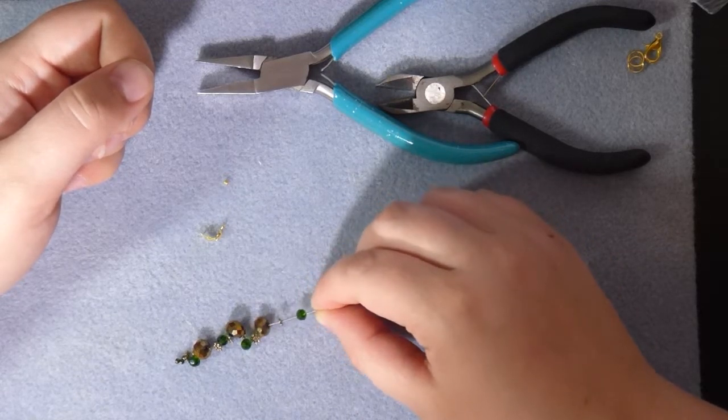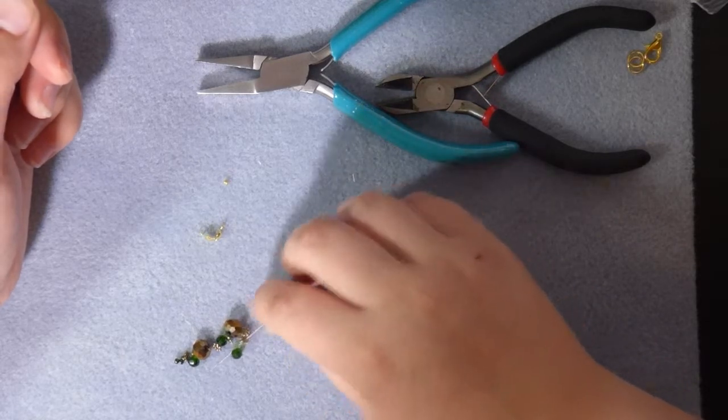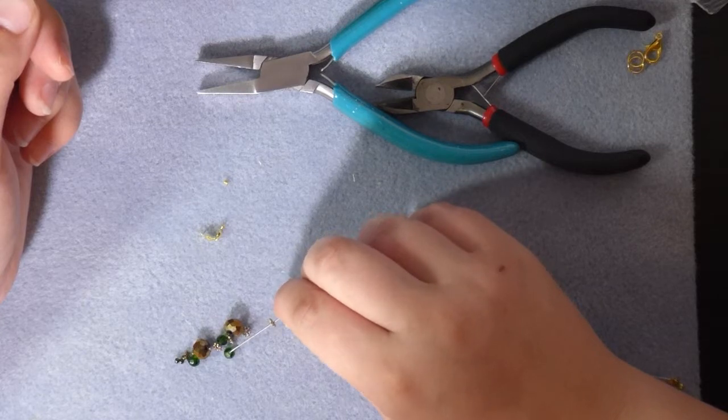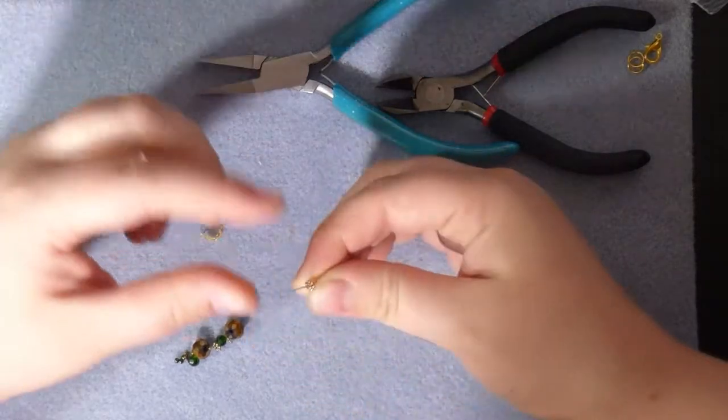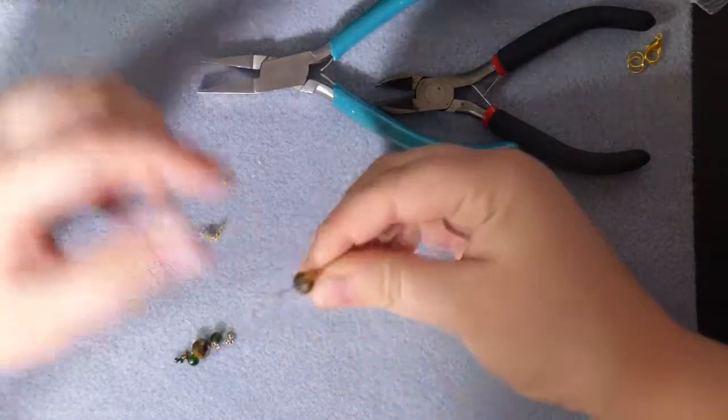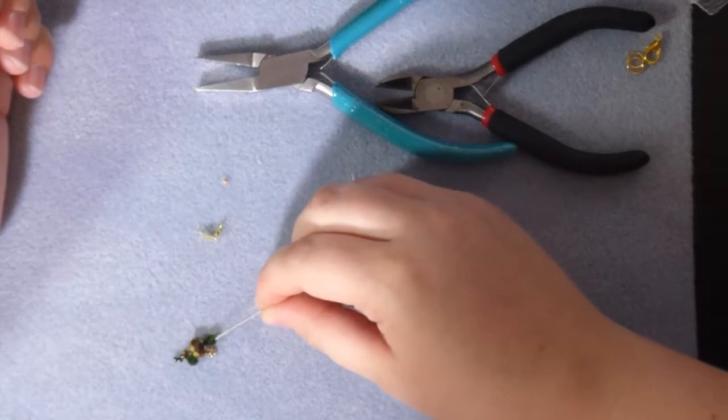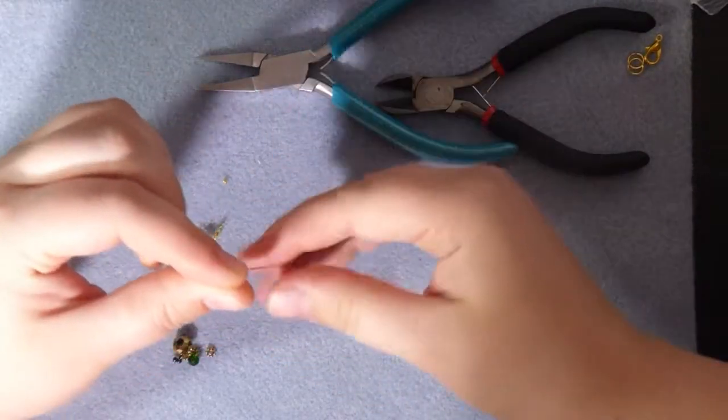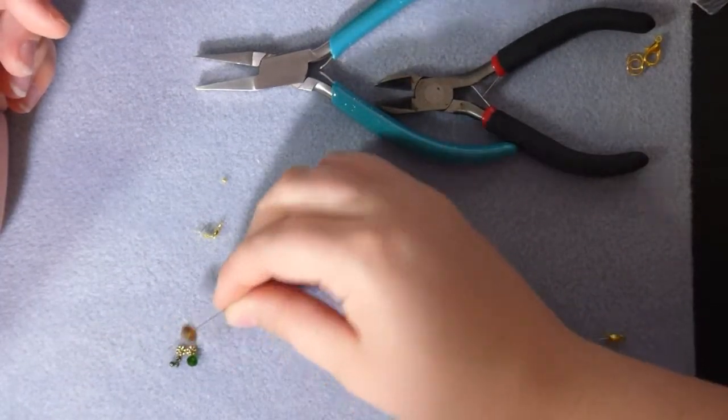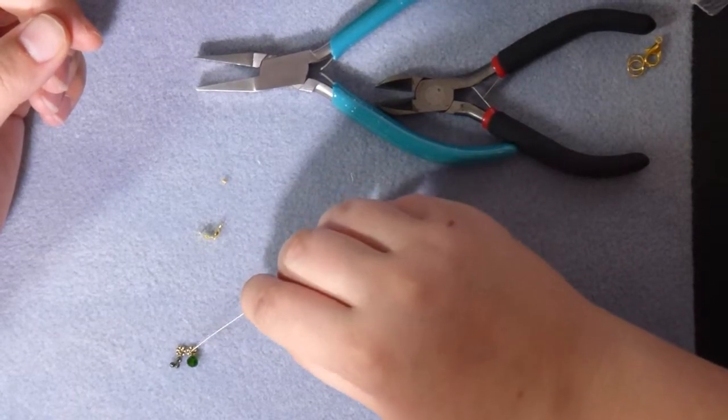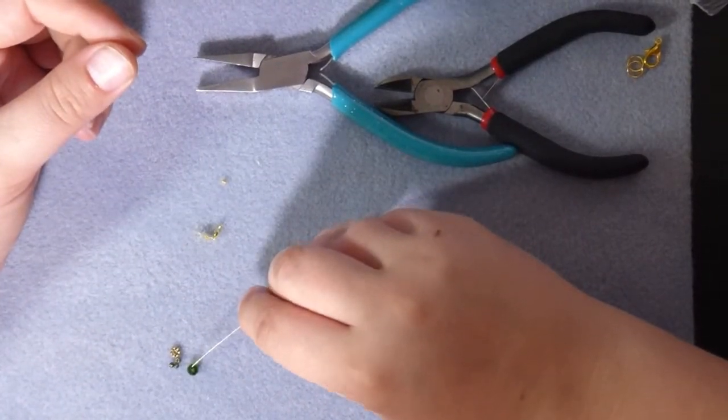So I've got some seed beads here, some little gold spacer beads, some small green crystals, and some gold crystals that are a bit bigger. Once I've got all of these on, I will be able to pop the crimp bead and the calotte on the other side and fasten them in the same way. The good thing about tiger tail is it's nice and stiff, so it almost acts like a needle, so you pick your beads up nice and easily.